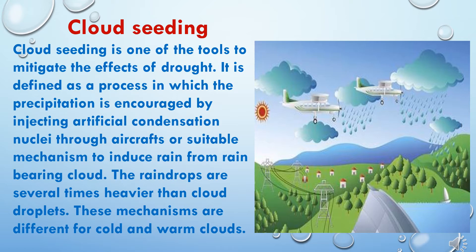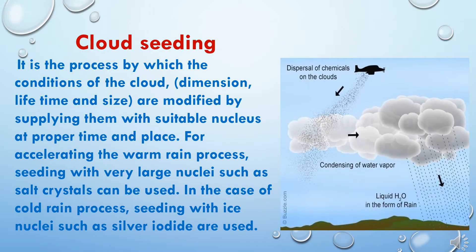Raindrops are several times heavier than cloud droplets. These mechanisms are different for cold and warm clouds. Cloud seeding is the process by which the conditions of clouds — like dimensions, lifetime, and size — are modified by supplying them with suitable nuclei at the proper time and place. For accelerating the warm rain process, seeding with very large nuclei such as salt crystals can be used. In the case of the cold cloud process, seeding with ice nuclei such as silver iodide is used.